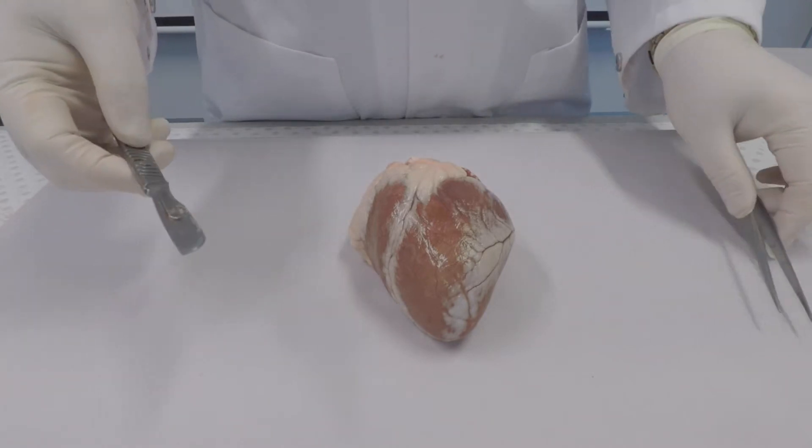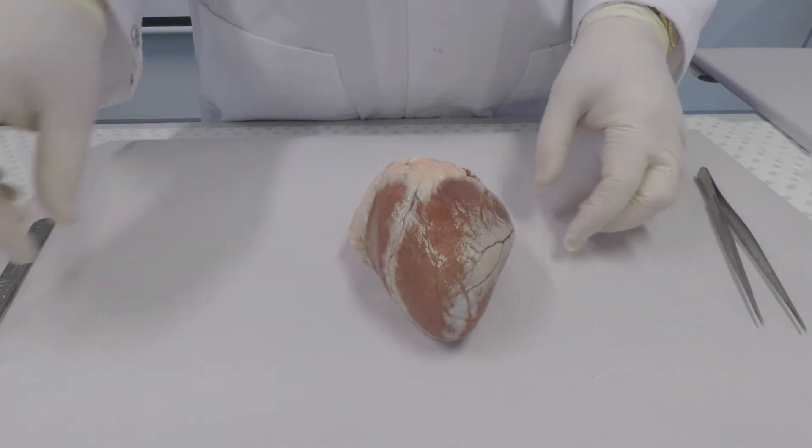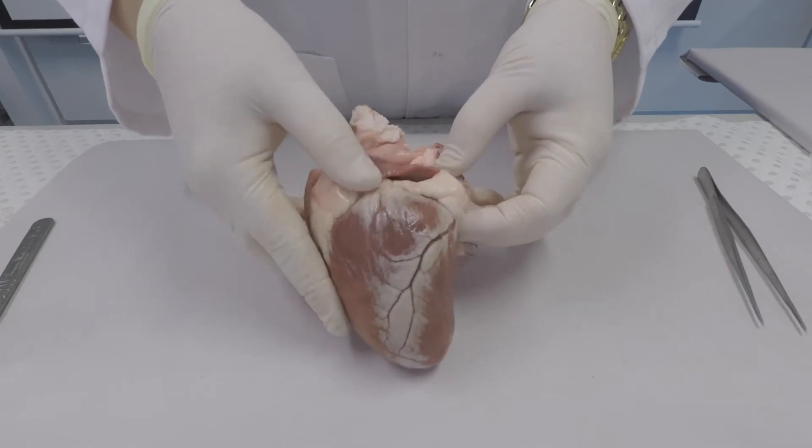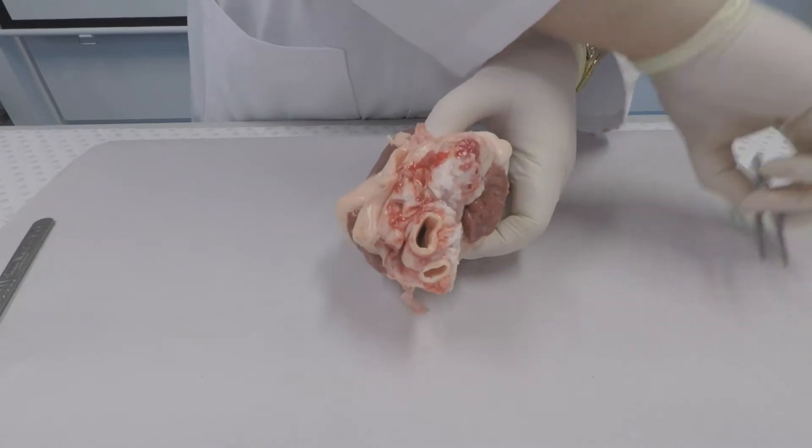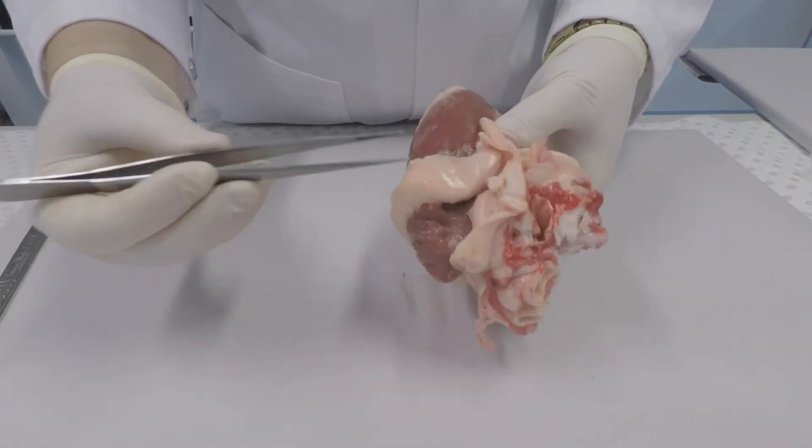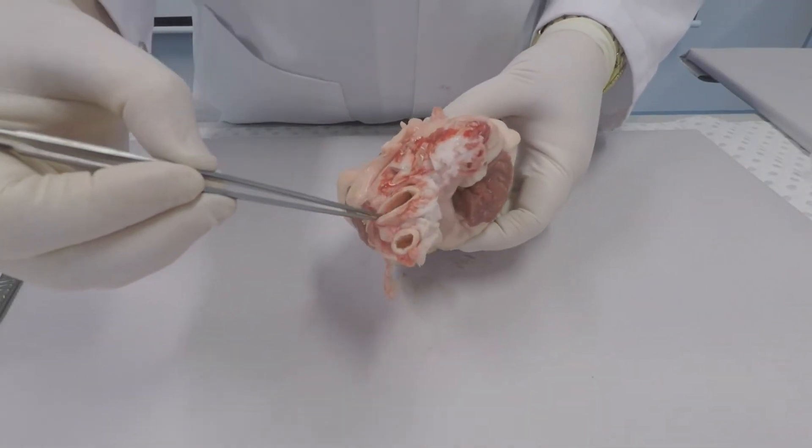This is the front of the heart. You can see the large blood vessels and arteries that feed the heart tissue itself. There's the atria again. We can see the large blood vessels that exit the heart and enter the heart.